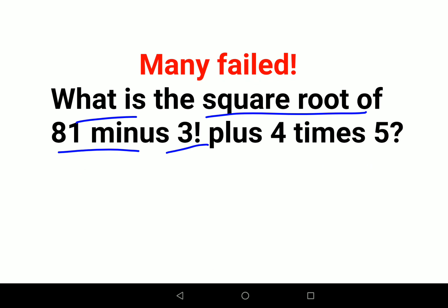Now in this kind of scenario, please understand a lot of people make a mistake. Let's first write this down. I will show you the mathematical representation. We have square root of 81 minus 3 factorial plus 4 times - times means multiplying by 5.